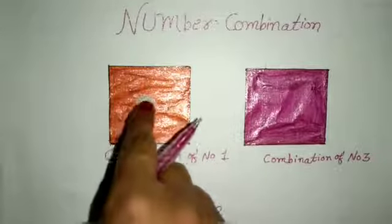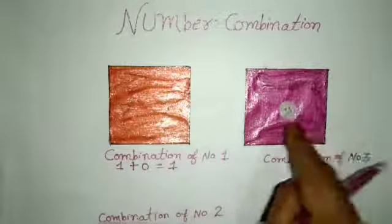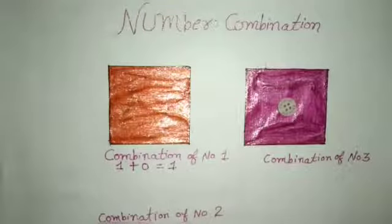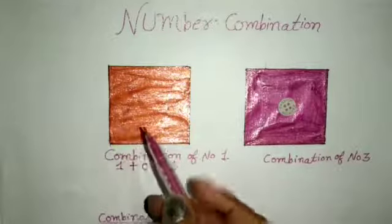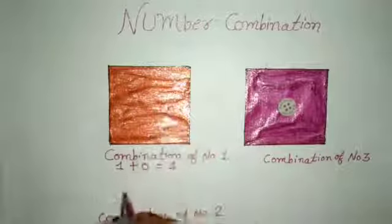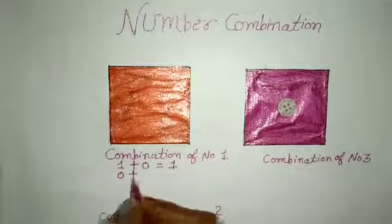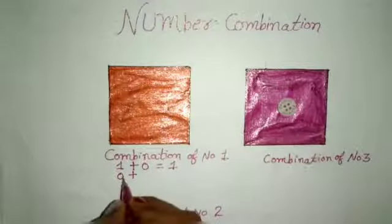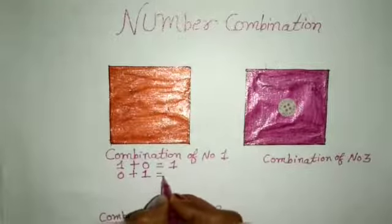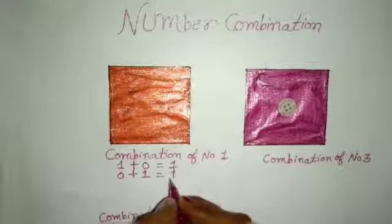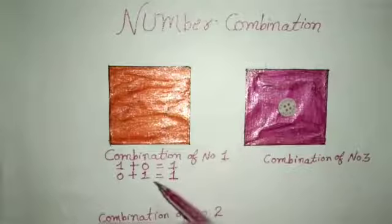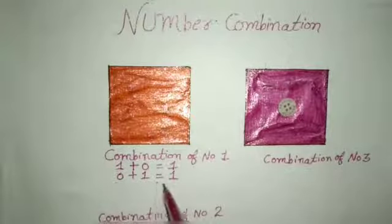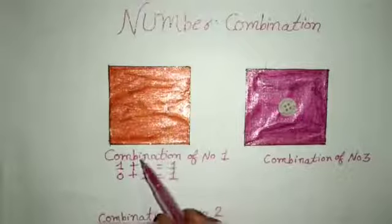Now I shift this button into the second box. First box me kya hai? Nothing — ek bhi button nahi hai. Zero plus second box me one button hai. Zero plus one equal to one. This is combination of number one: one plus zero equal to one, and zero plus one equal to one.